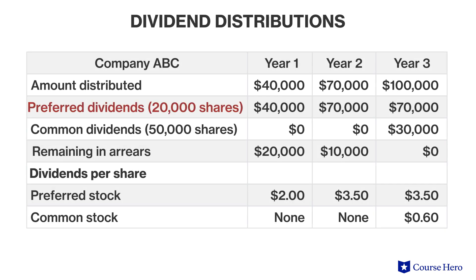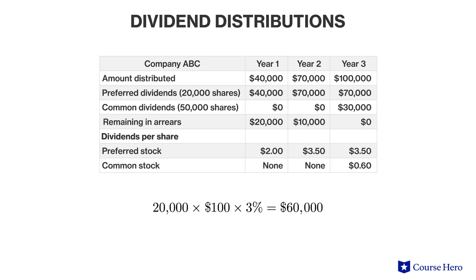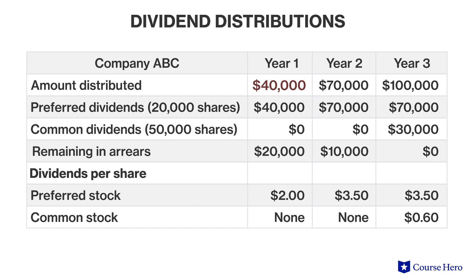Suppose that company ABC has 20,000 shares of cumulative 3% $100 par preferred stock and 50,000 shares of $10 common stock outstanding. The 3% $100 par means that each holder of the preferred stock is entitled to $3 in dividends each year. Since there are 20,000 such shares, the company must pay $60,000 annually in dividends to preferred shareholders before any dividend can be paid to common shareholders. Assume the company paid dividends totaling $40,000 in year one, $70,000 in year two, and $100,000 in year three. In year one, preferred shareholders received $20,000 less than what they were entitled to. In year two, $10,000 of this $20,000 shortage was made up. The final $10,000 shortage is made up in year three. Common shareholders will not receive any dividends until year three, when a total of $180,000 ($60,000 times three) has been paid out to preferred shareholders.